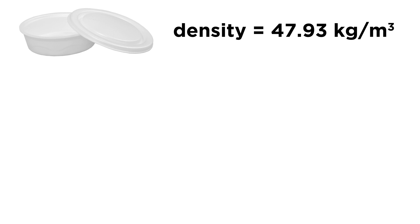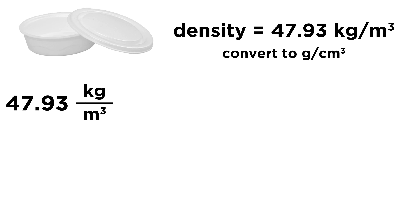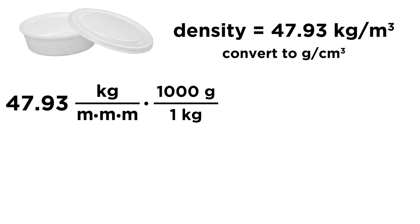Now let's look at the next problem. We have some packaging material like a styrofoam of some kind, and the density is 47.93 kilograms per cubic meter. We want this in grams per cubic centimeter. We can treat these units just like algebraic variables, and meters cubed literally means meters times meters times meters. First, let's take care of kilograms: we don't want kilograms, we want grams, so we use the conversion factor 1,000 grams over 1 kilogram. Those cancel and we get grams.